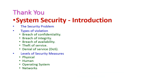To summarize, we have seen the introduction to system security, including security problems, types of violations, and levels of security measures. The five types of violations are breach of confidentiality, breach of integrity, breach of availability, theft of service, and denial of service. The four levels of security measures are physical, human, operating system, and network level. In the next class, we will see another important topic from the fifth unit. Thank you.